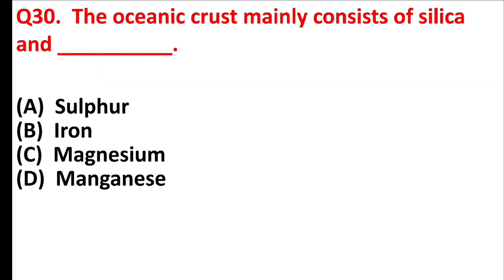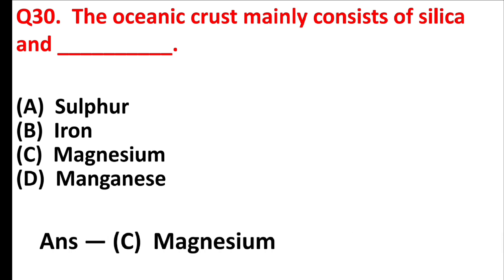The oceanic crust mainly consists of silica and? Answer is option C: magnesium.